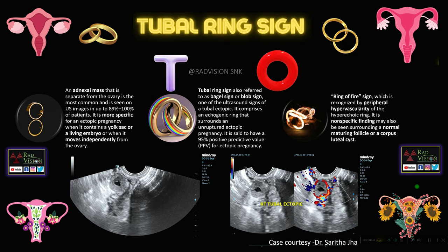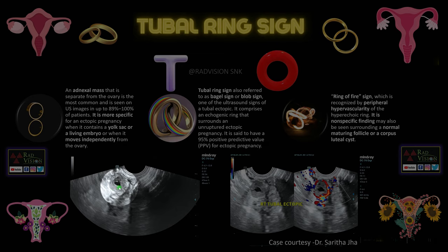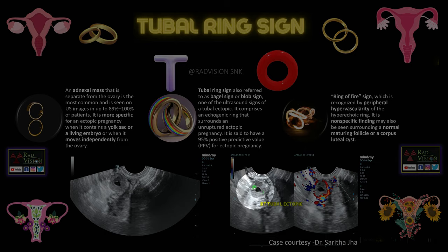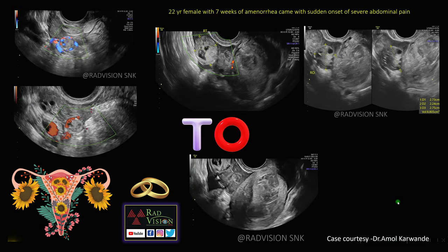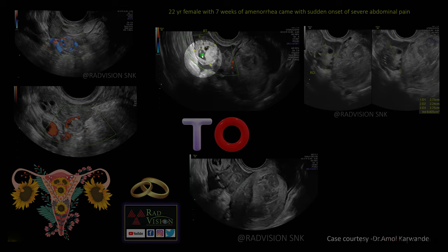Sometimes the ring of fire sign can be seen along with the tubal ring sign. This is a case where the UPT was positive, there is no gestational sac in the endometrial cavity, and on color Doppler you can see the classical ring of fire sign around the tubal ring. This was a case of right tubal ectopic. However, ring of fire sign is not sensitive for ectopic pregnancy, as it may also be seen in a normal mature follicle or corpus luteal cyst.